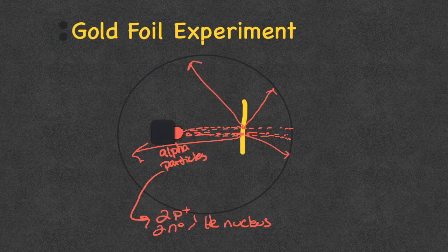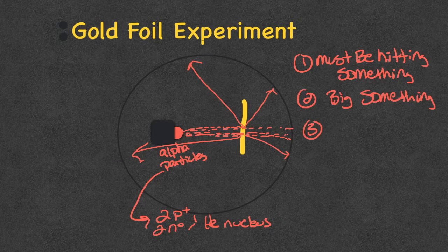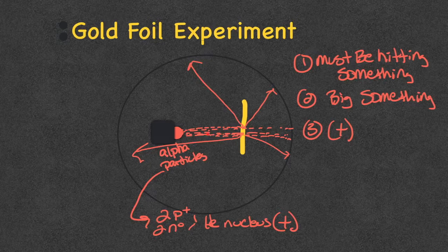He noticed several things about the ricocheting particles: they must be hitting something, that something must be big, and that something must be positive. Because a helium nucleus is positive, when these particles hit something in the gold foil and are repelled, whatever they're hitting must also be positive.